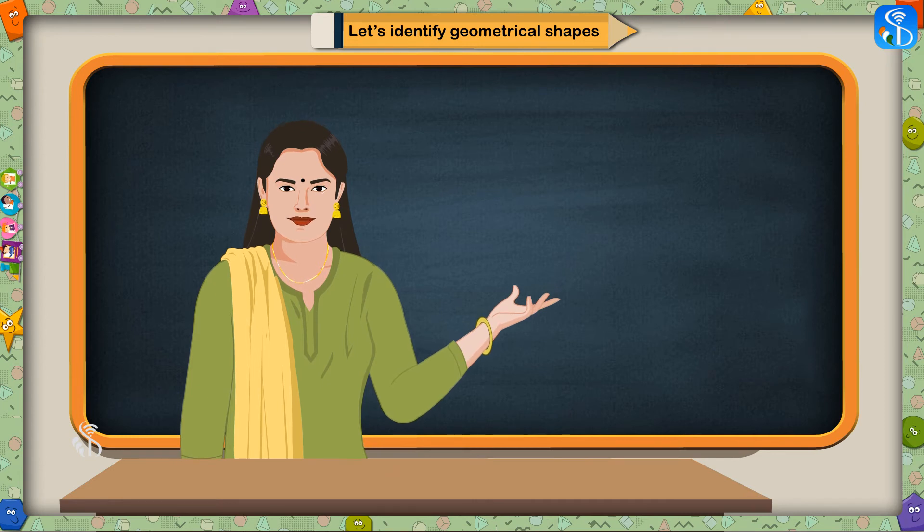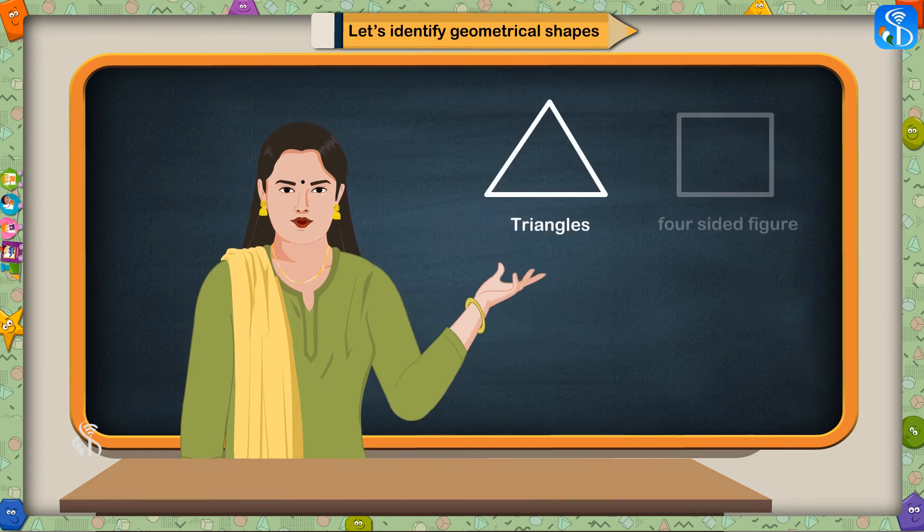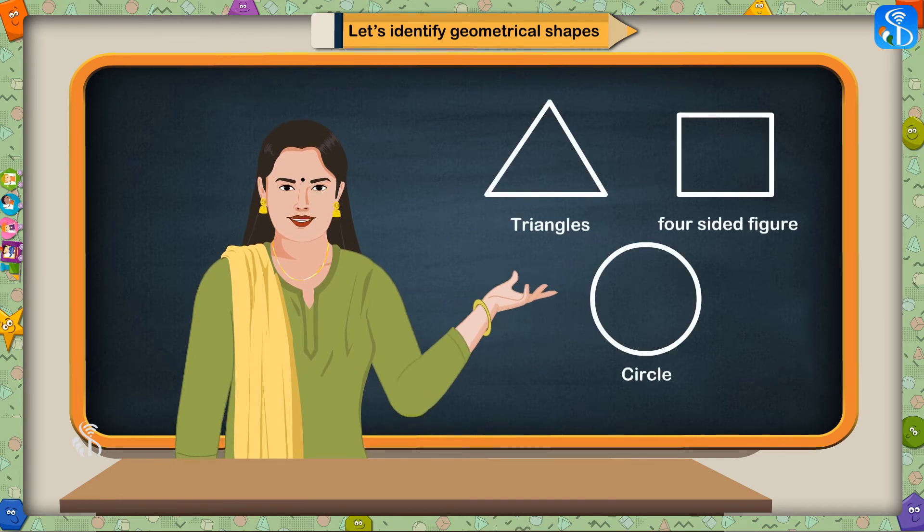Activity 3. Children, can you tell me in which tools of games can you see shapes like triangles, four-sided figures, and circles?